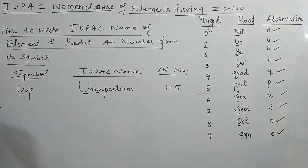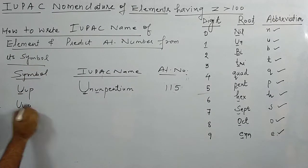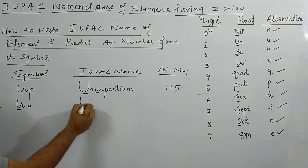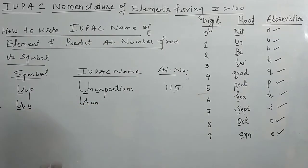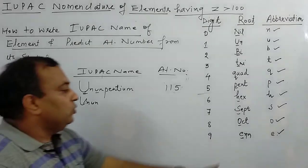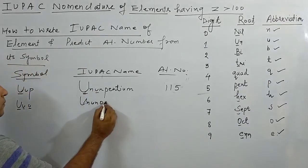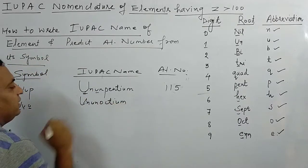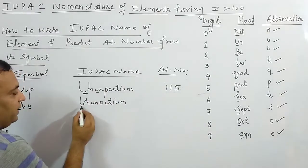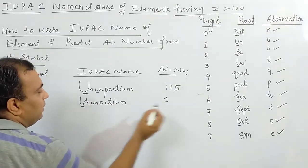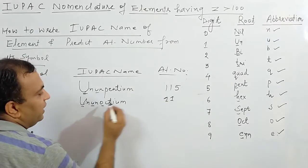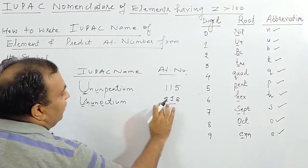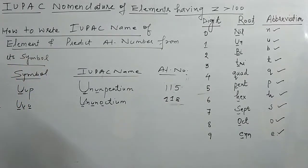Second reverse example: symbol UUO. U stands for un, again U stands for un, O stands for oct. IUPAC name is Ununoctium. Atomic number: un → 1, un → 1, oct → 8. So atomic number is 118.